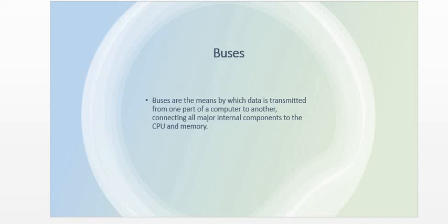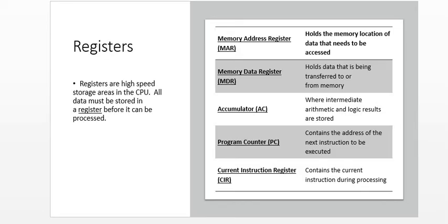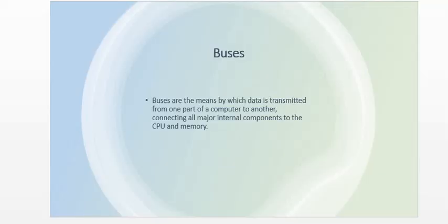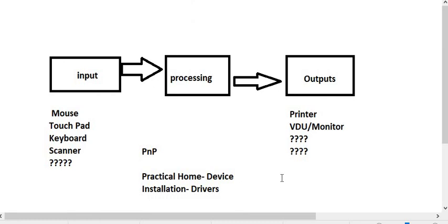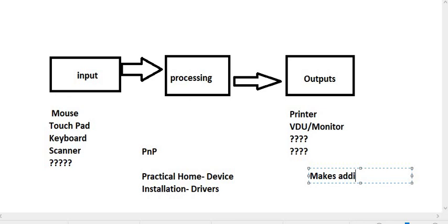We have various types of buses in our computer systems that carry data from one point to the other. There may be a bus specifically for carrying address-related instructions, and a bus for carrying data. We have the data bus, the instruction bus, and the control bus, among others. I want you to go and make notes on the buses available in a PC — specifically, research five types of buses in the CPU, naming each bus and what it does.